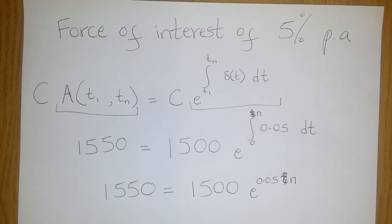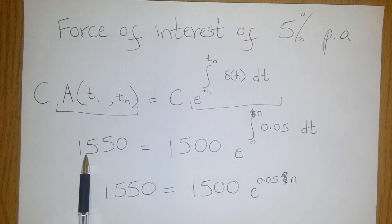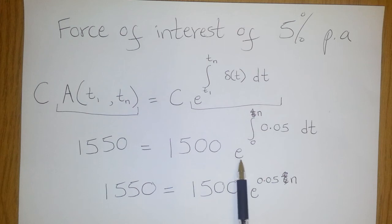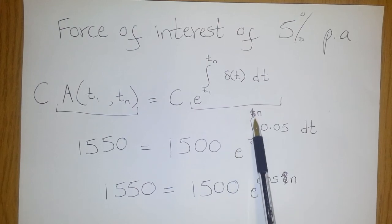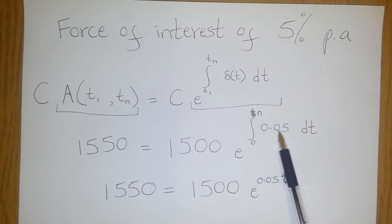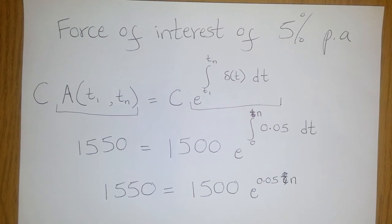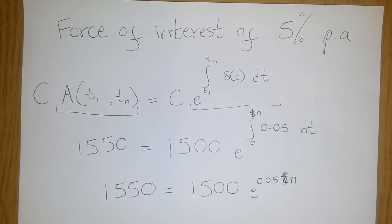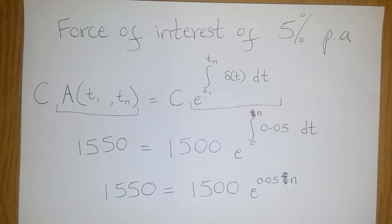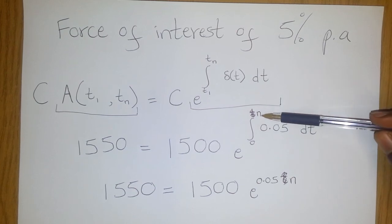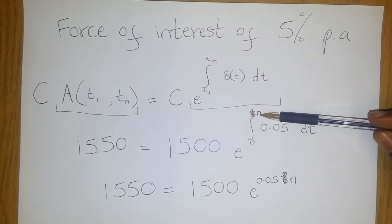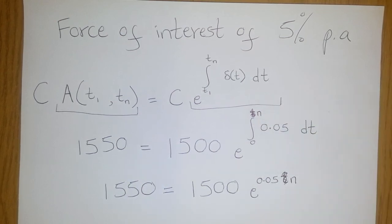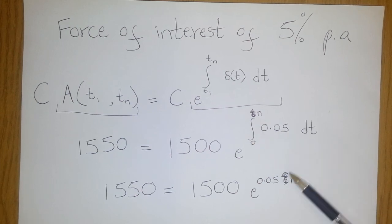So in our example, 1550 would be given by multiplying 1500 by the exponential of the integral of our force of interest, which is 0.05, over a certain period of time, 0 to n. We're using n here because we do not know what the period of time is, so we can leave it as n so that we use this equation to work out the value of n.